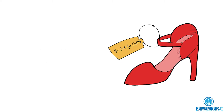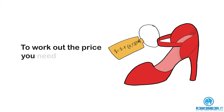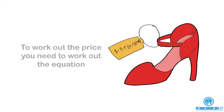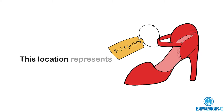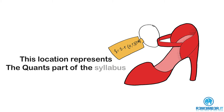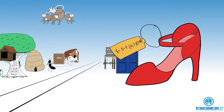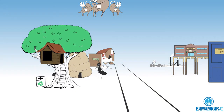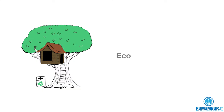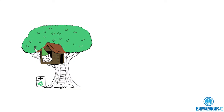The second location is here — it's the giant shoe. Think: shoe equals 2, which equals the second location. The giant shoe has a price tag on it, but in order to work out the price, you need to work out an equation. As such, this location represents the quantitative methods part of the syllabus.